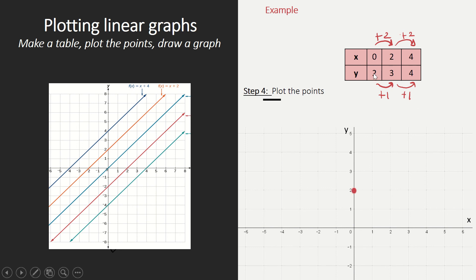The first point is zero, two. Our second point is two, three, so we go two on our x-axis and three on our y-axis. And then our last point is four, four, so four on our x-axis and four on our y-axis.